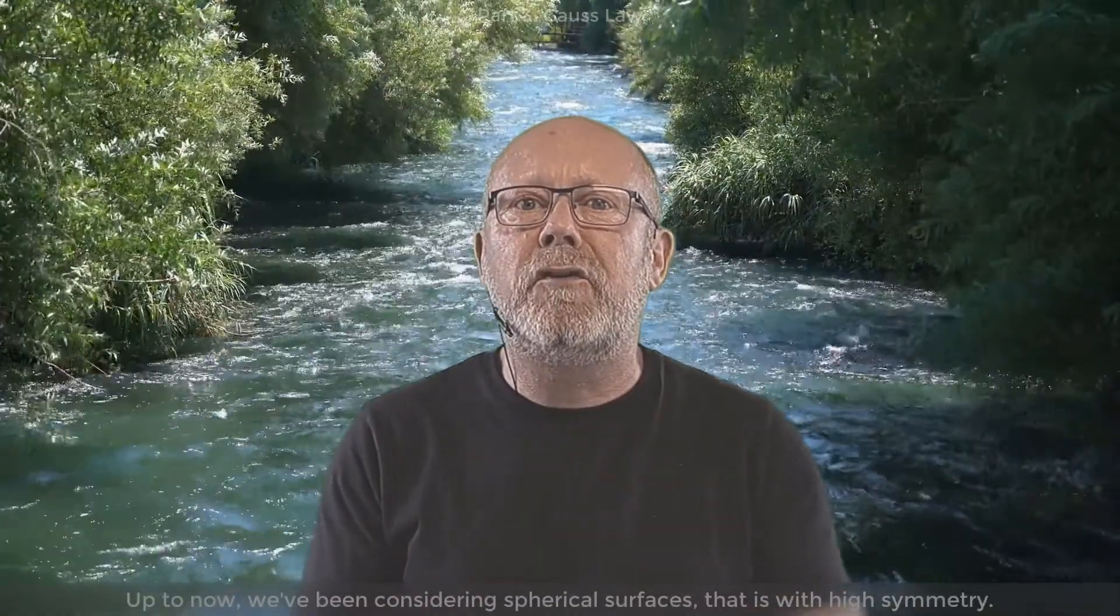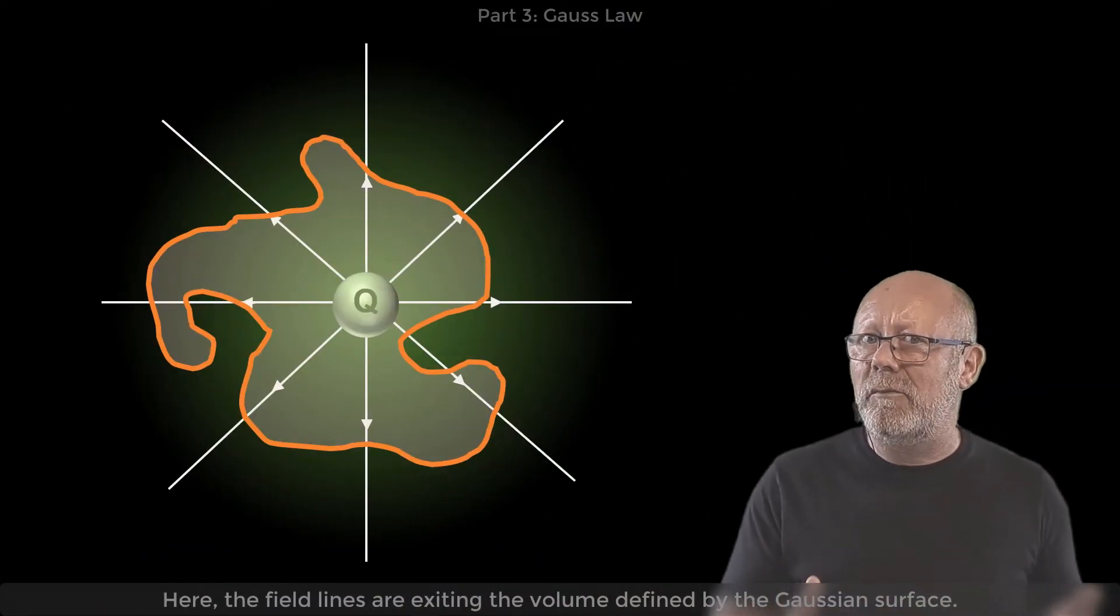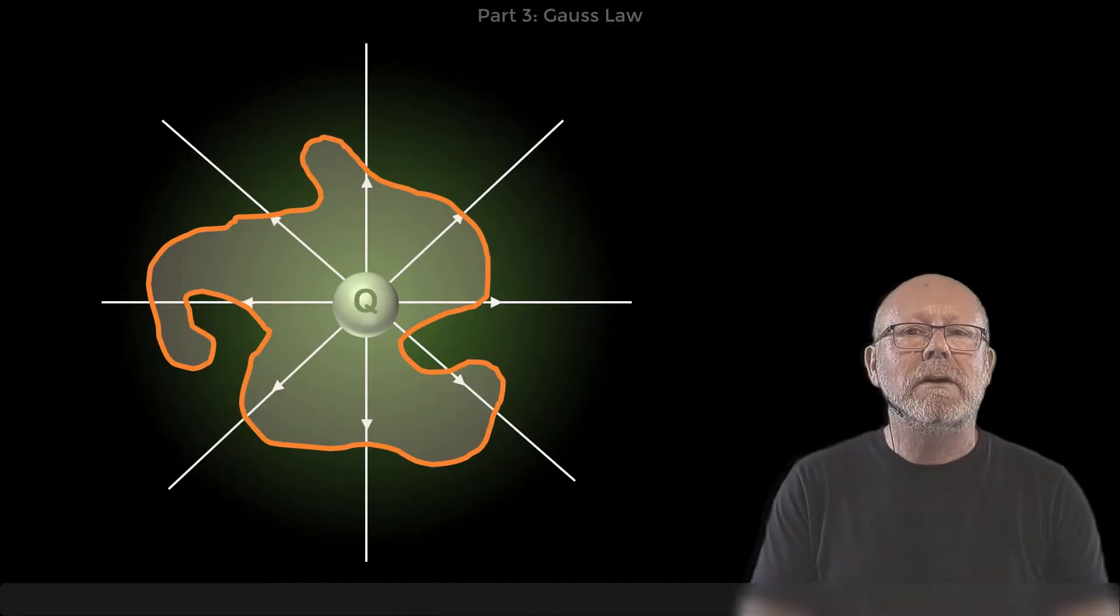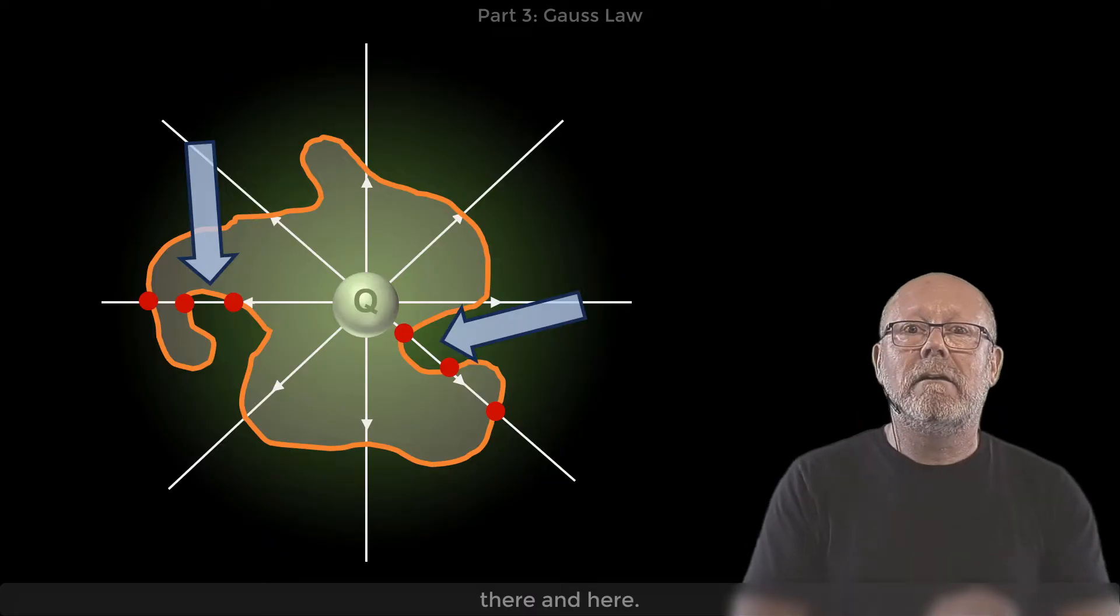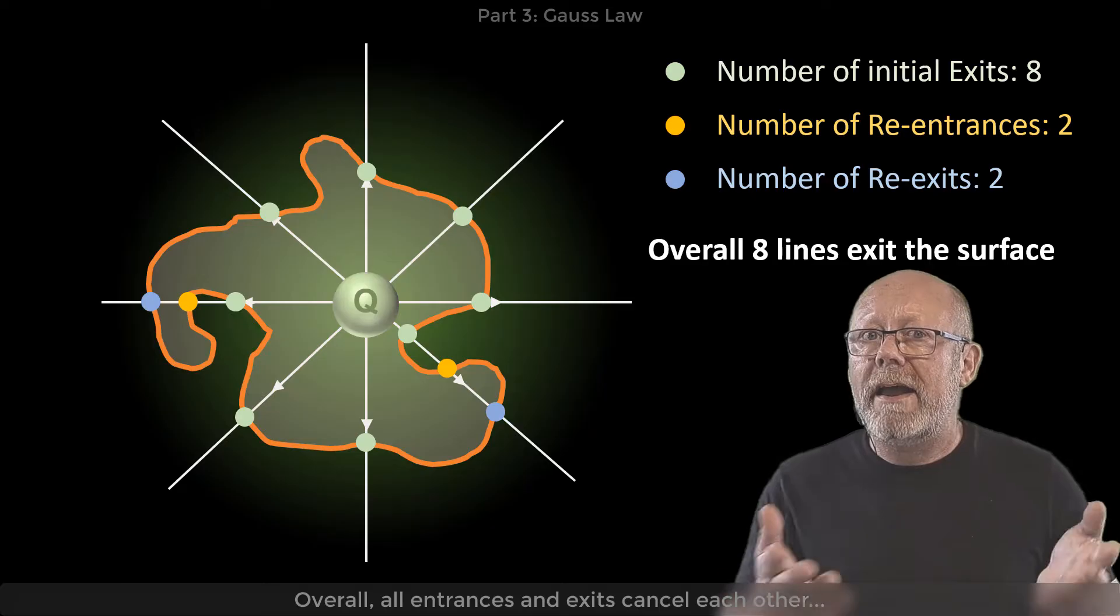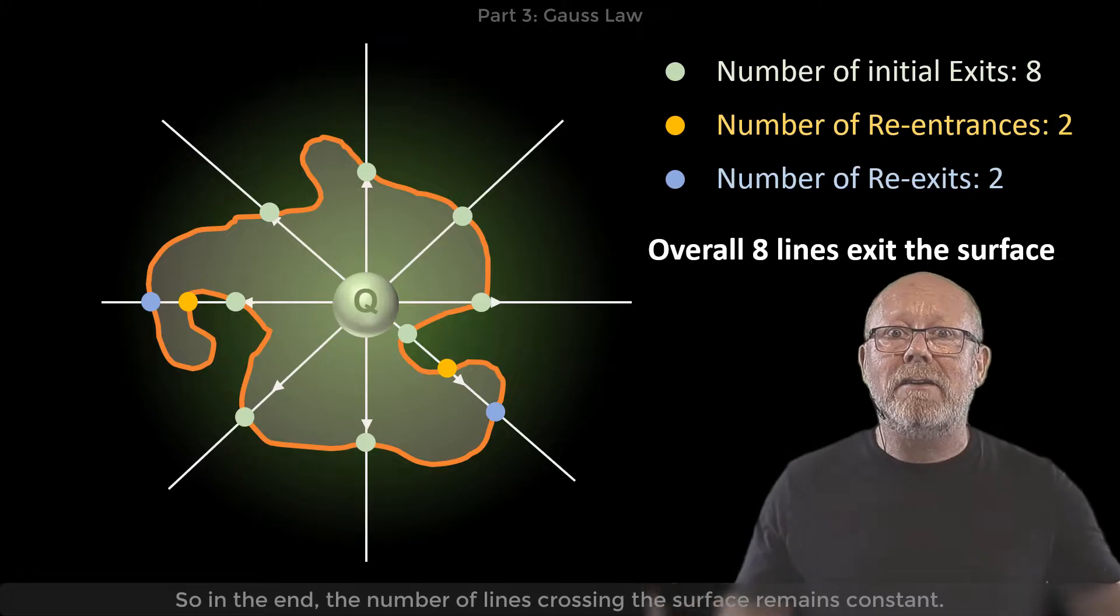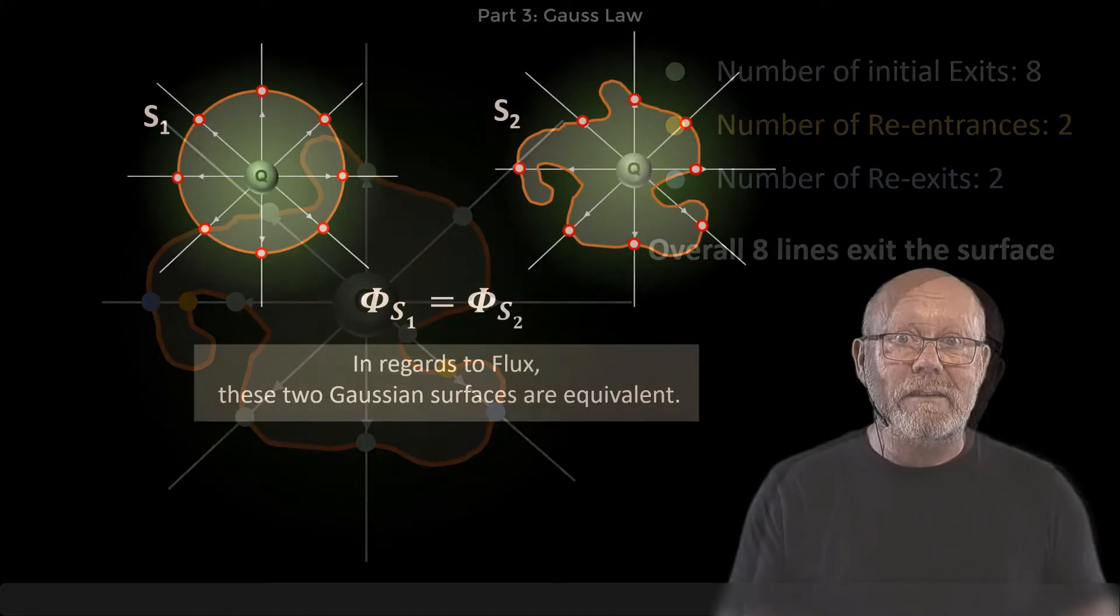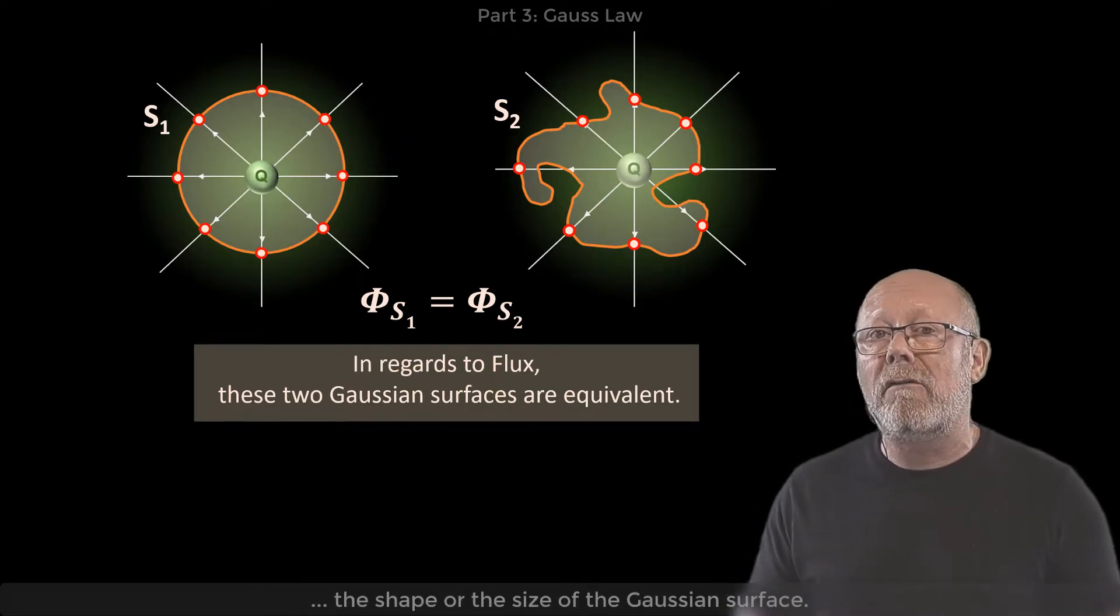Up to now we've been considering spherical surfaces, that is, with high symmetry. Now let's get crazy and consider a crazy Gaussian surface like this one. So here the field lines are exiting the volume defined by the Gaussian surface, right? But you can see that because of this crazy surface, some come back in there and here. But note that they all go out again. Overall, all entrances and exits cancel each other. So in the end, the number of lines crossing the surface remains constant. As a conclusion, the electric field flux does not depend on the shape or size of the Gaussian surface.